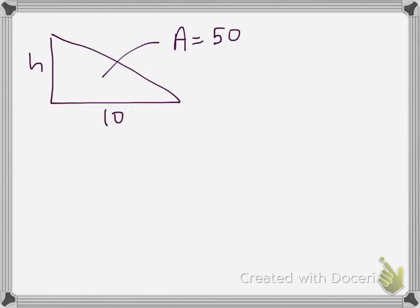So I brought back that first triangle, the one where we were given the base of 10, we don't know the height, and we're given an area of 50. So let's plug these into that area of a triangle formula and see how this is going to work out. So remember, area is equal to 1 half times base times height.